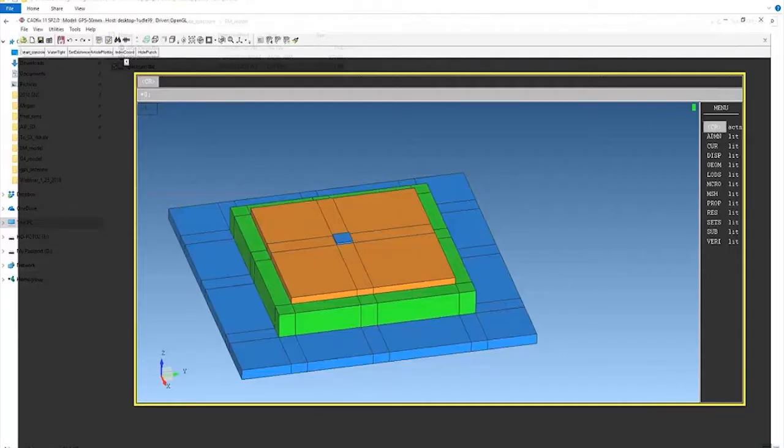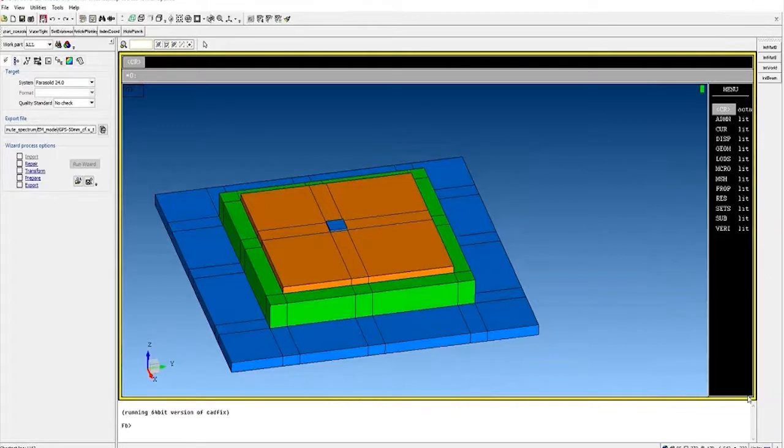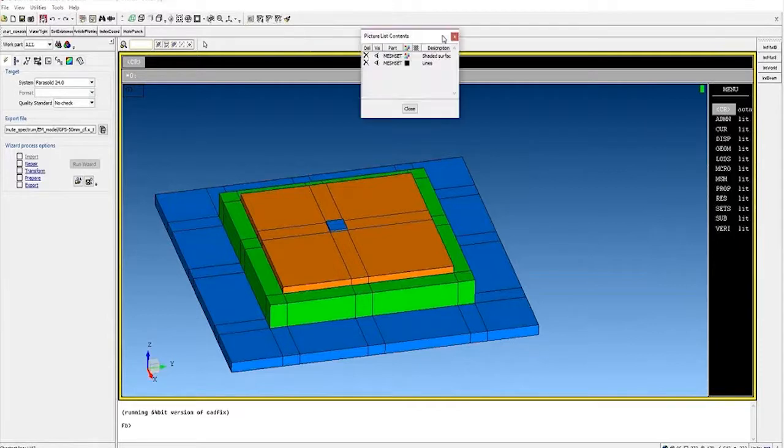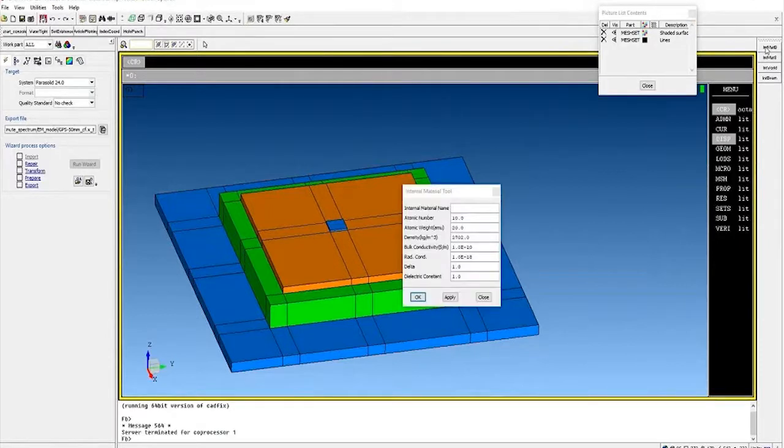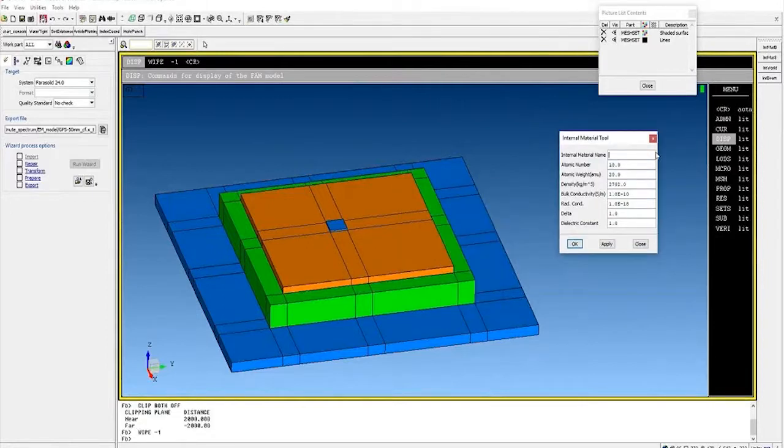So, this is the geometry that I'm working with. First, we're going to define the material parameters. Within here, you can define your materials that you're going to be using. So, you can enter a material name, atomic number, and atomic weight. You also want to give it a density value. You want to give it bulk conductivity. You can include information about the radiation-induced conductivity and the delta value that's associated with that. And then, finally, you want to provide the program with a dielectric constant.